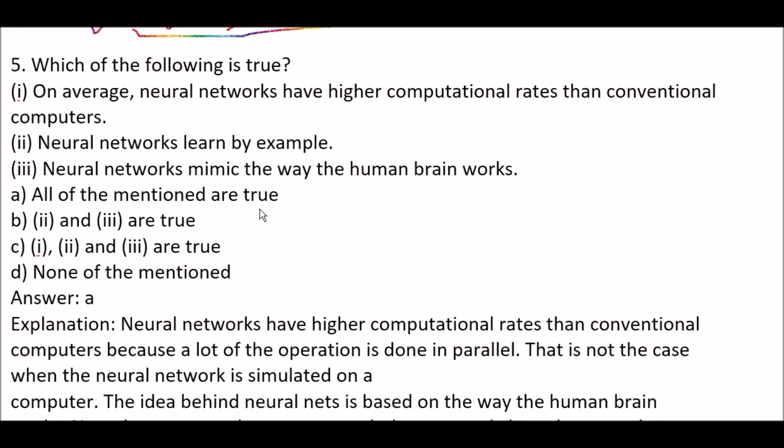Next question: which of the following is true? Statement 1: on average, neural networks have higher computational rates than conventional computers. Statement 2: neural networks learn by example. Statement 3: neural networks mimic the way the human brain works. Option A: all of the mentioned are true. Option B: statements 2 and 3 are true. Option C: first, second and third are true. Option D: none of the mentioned. The right answer is option A — all of the mentioned are true.